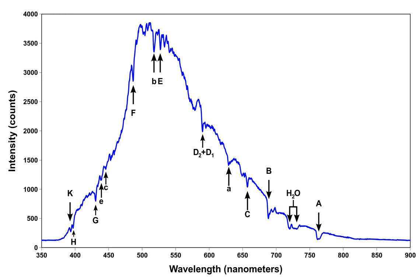A spectral line extends over a range of frequencies, not a single frequency. In addition, its center may be shifted from its nominal central wavelength. There are several reasons for this broadening and shift. These reasons may be divided into two general categories: broadening due to local conditions and broadening due to extended conditions. Broadening due to local conditions is due to effects which hold in a small region around the emitting element, usually small enough to assure local thermodynamic equilibrium.